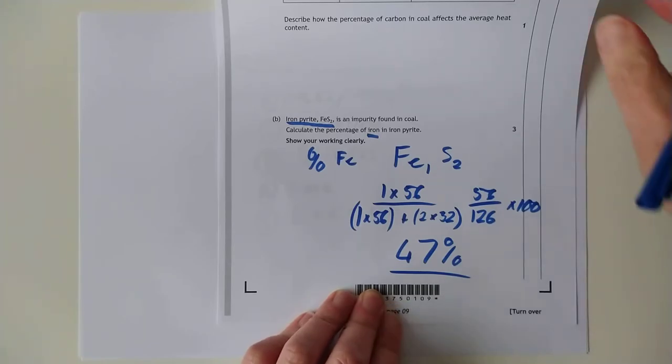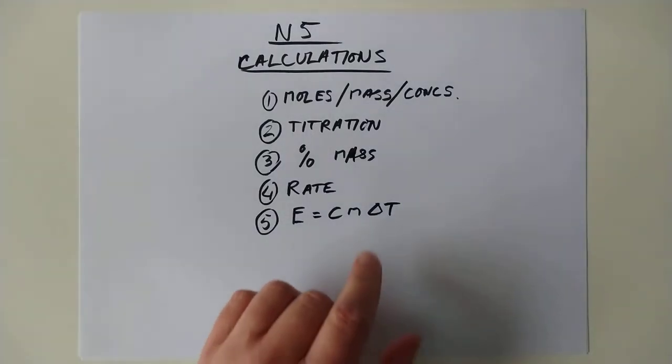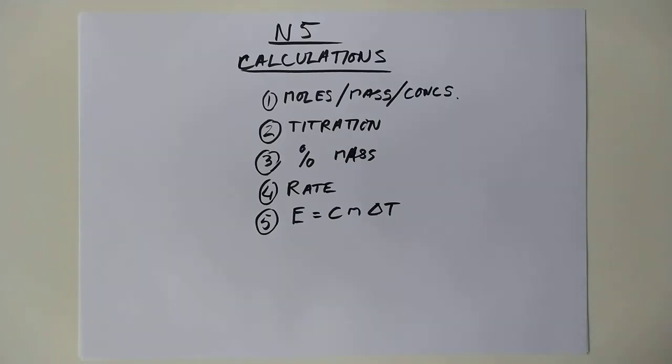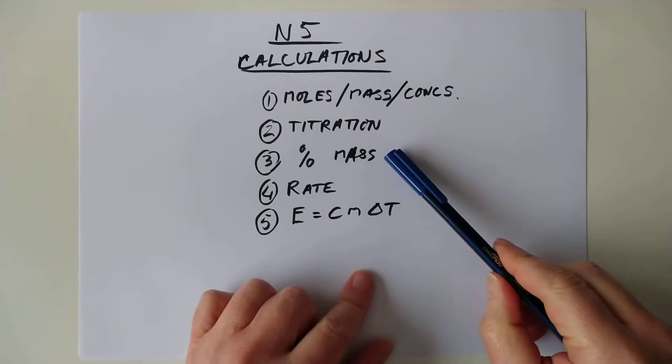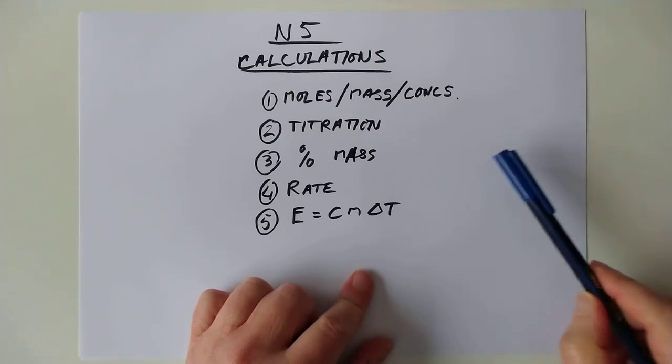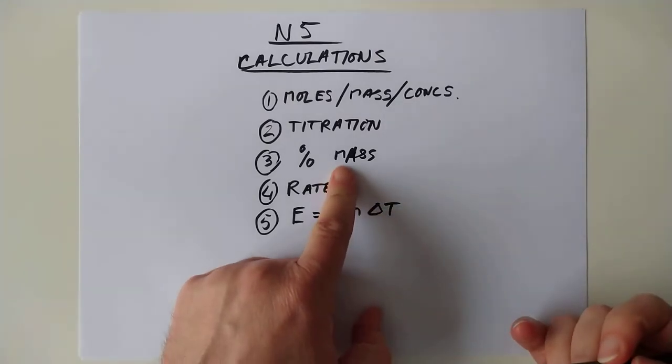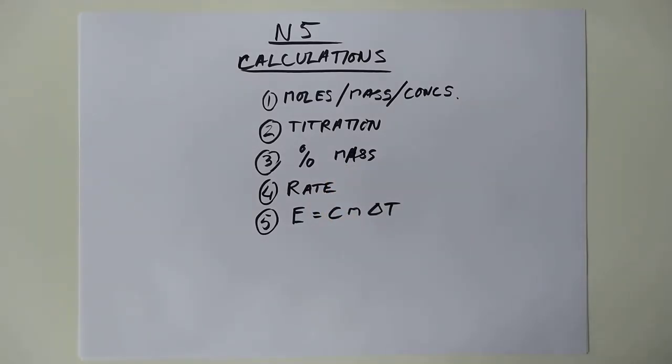I told you that would be nice and quick. So that's percentage mass, folks. You take the total percentage of the element you're interested in and divide it by the complete mass of the formula, otherwise known as the GFM. Just watch for the fact you might have more than one atom. I've seen a classic one for this.